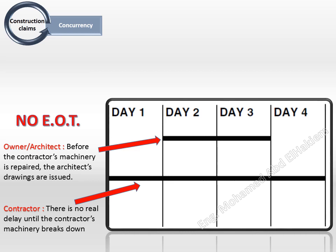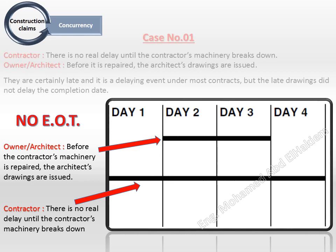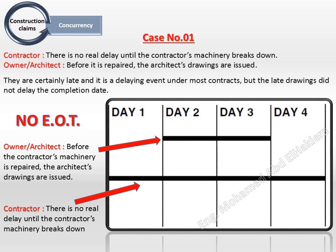Case number 6. There is no real delay until the contractor's machinery breaks down. Owner situation: before it is repaired, the architect's drawings are issued. They are certainly late and it is a delaying event under most contracts, but the late drawings did not delay the completion date. The determination result here is no extension of time.